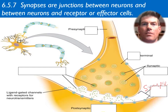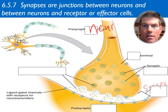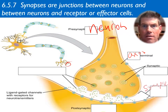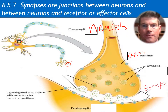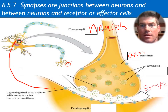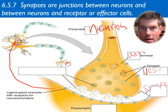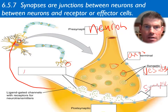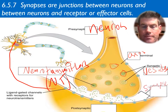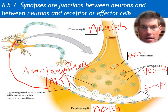This is the presynaptic neuron. Here is the axon terminal right at the end of the neuron. These little bubbles are called vesicles and they hold very important molecules called neurotransmitters, abbreviated NT. You can see all these neurotransmitters coming across to the postsynaptic neuron to extend that signal.